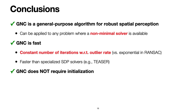In conclusion, we presented graduated non-convexity as a general-purpose algorithm for robust spatial perception, applicable to any problem with a non-minimal solver. GNC is highly efficient with an almost constant number of iterations with respect to increasing outlier rates, while RANSAC exhibits exponential growth. GNC is also faster than specialized algorithms based on SDP solvers such as Teaser. A key advantage of GNC is that it does not require initialization. Thanks for your attention.